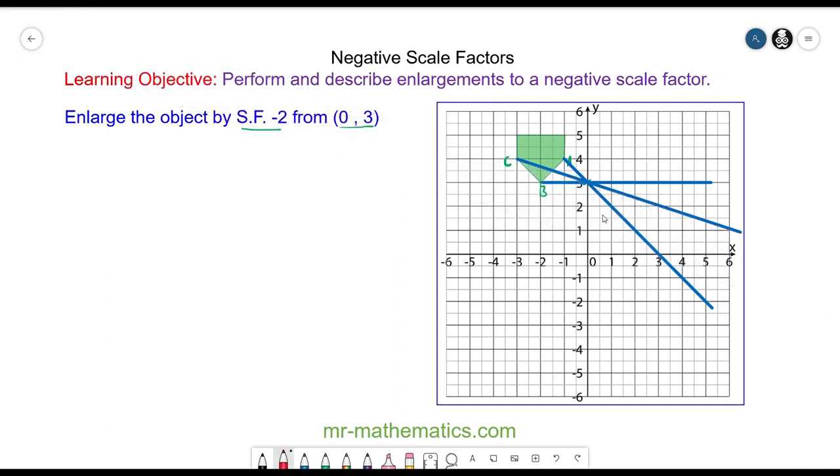Okay so now to enlarge our vertices. You can see from A to the centre is one diagonal unit. So the enlarged vertex will be here. And from B to here is 2 so the enlarged vertex will go here.